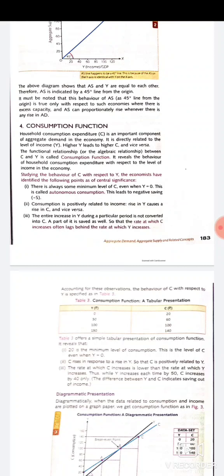The entire increase in income during a particular period is not converted into consumption. The rate at which consumption increases lags behind the rate at which income increases — that is, the rate of increase in income is greater than the rate of increase in consumption. Table 3 shows the consumption function: when income is zero, consumption is 20; when income increases to 50, consumption increases to 60; and when income is 100, consumption is also 100.